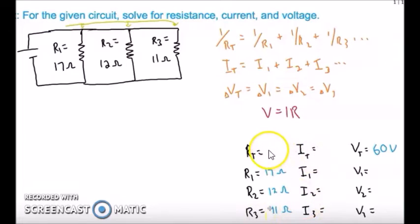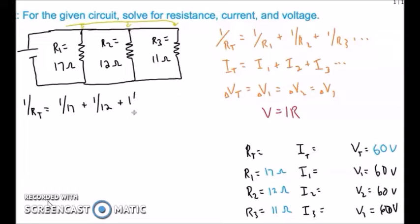We need to first calculate RT and for that we have this formula which we are going to use. 1 upon RT is equals to 1 upon R1, which is 17 ohms, plus 1 upon R2, which is 12 ohms, and 1 upon R3, which is 11 ohms. After solving it on calculator, we can see that it's about 0.233.